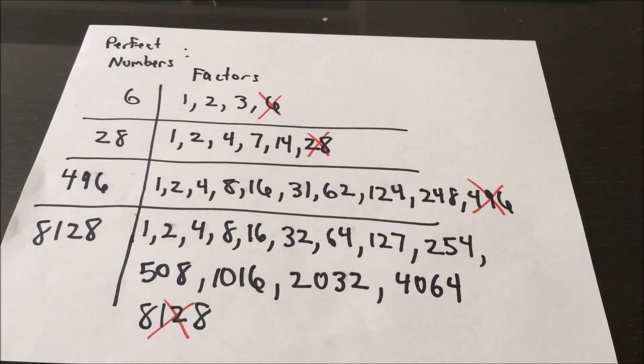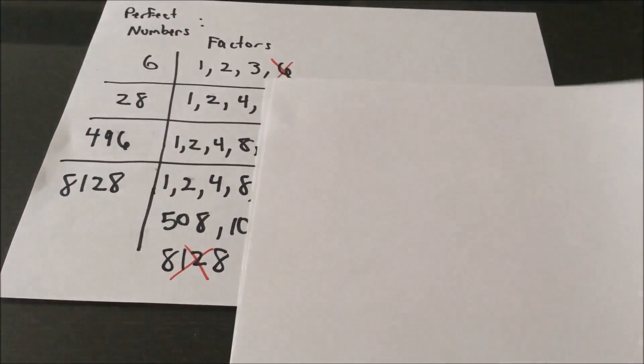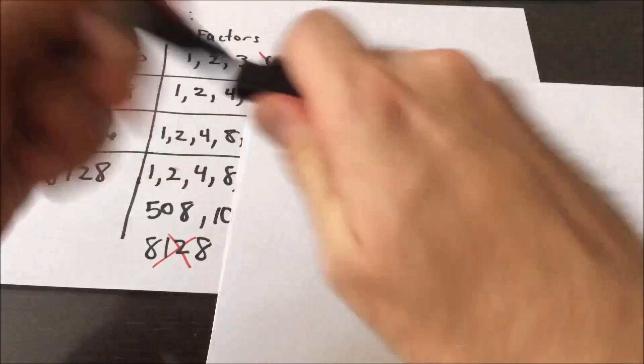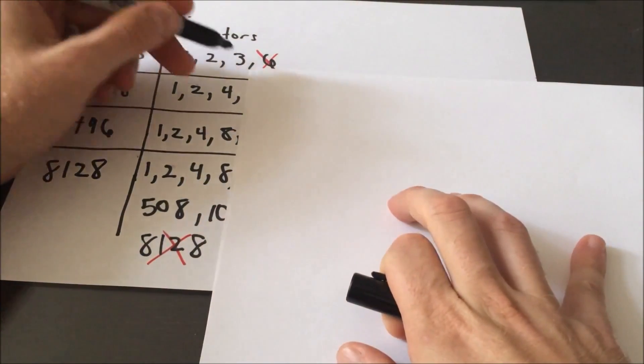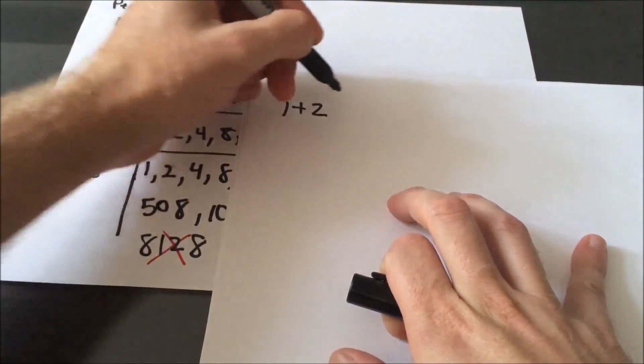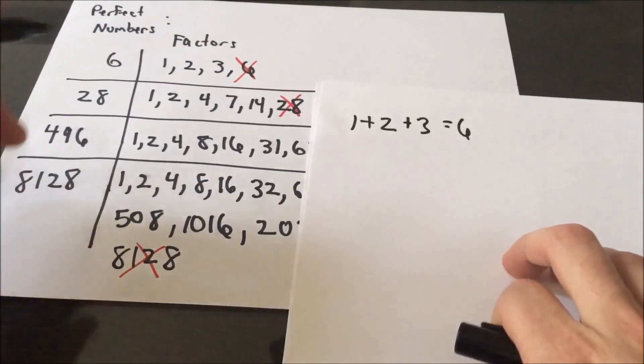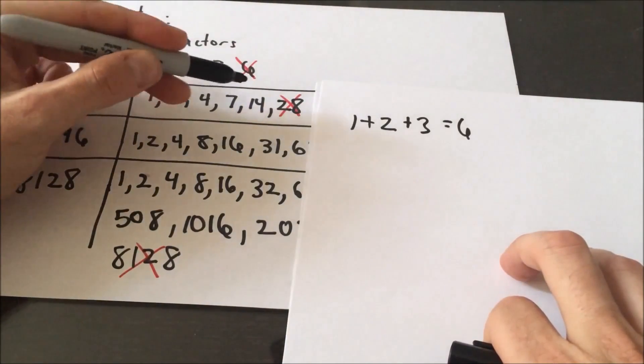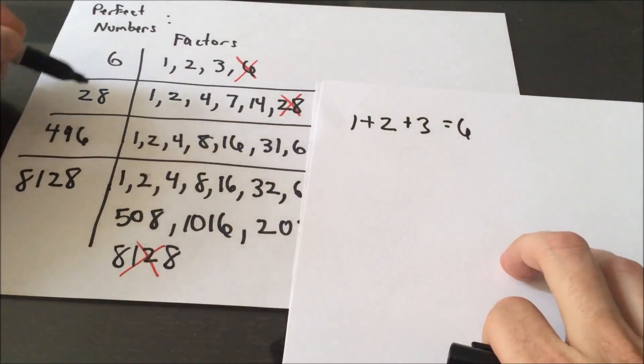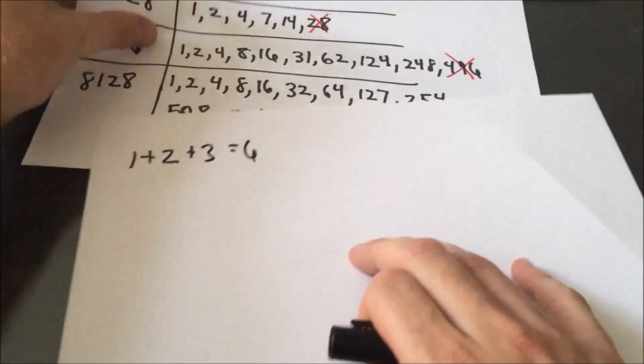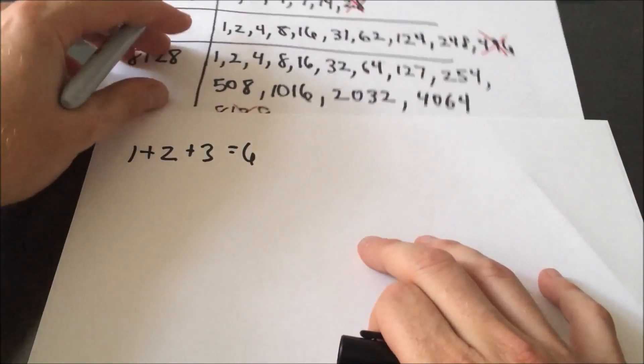So what makes a number perfect is the idea is if we take those factors and add them up, right, if we add 1 plus 2 plus 3, we in fact get 6. Likewise, if you take 1 plus 2 plus 4 plus 7 plus 14, it's going to add up to 28. You can verify that if you take, okay, we're going to write a lot of numbers...